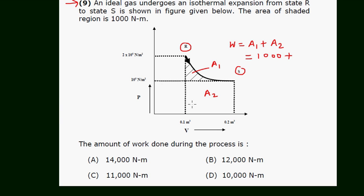This is rectangular, which is P. This is P into V2. Let us say this is V1. V2 minus V1.